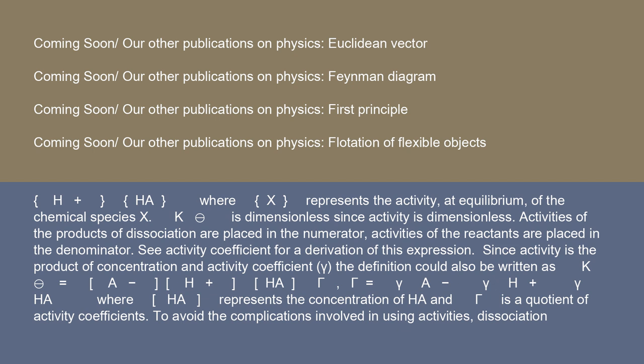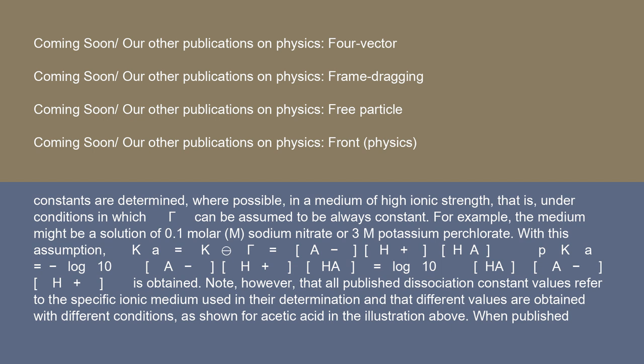To avoid the complications involved in using activities, dissociation constants are determined, where possible, in a medium of high ionic strength—that is, under conditions in which γ can be assumed to be always constant. For example, the medium might be a solution of 0.1 molar (M) sodium nitrate or 3M potassium perchlorate. With this assumption, Ka = K° × γ = [A⁻][H⁺]/[HA], and pKa = -log₁₀([A⁻][H⁺]/[HA]) = -log₁₀([HA]/[A⁻][H⁺]) is obtained.